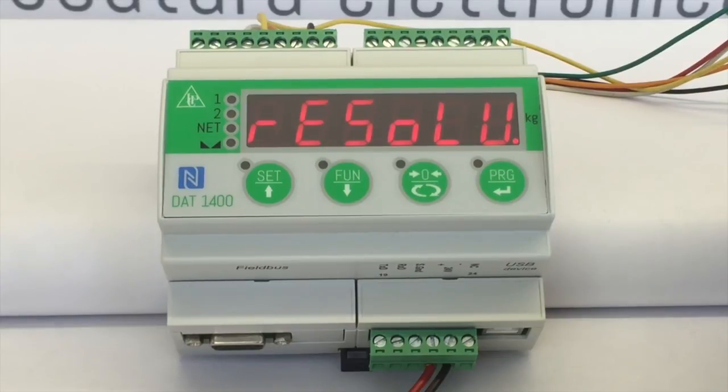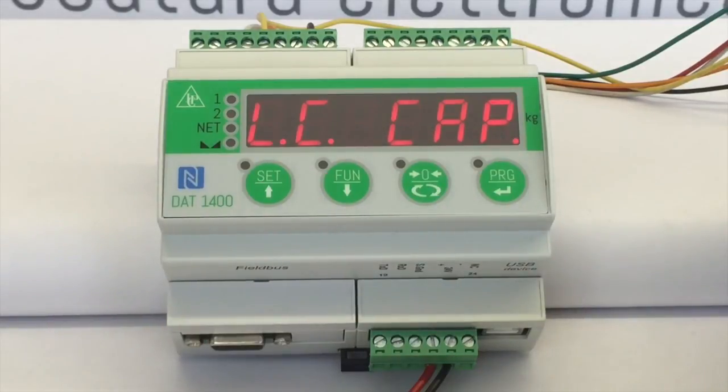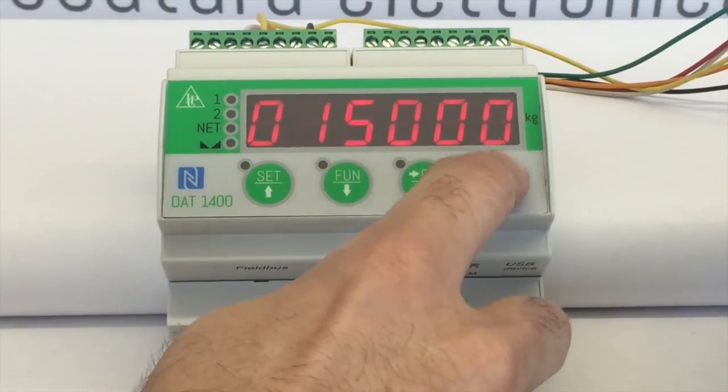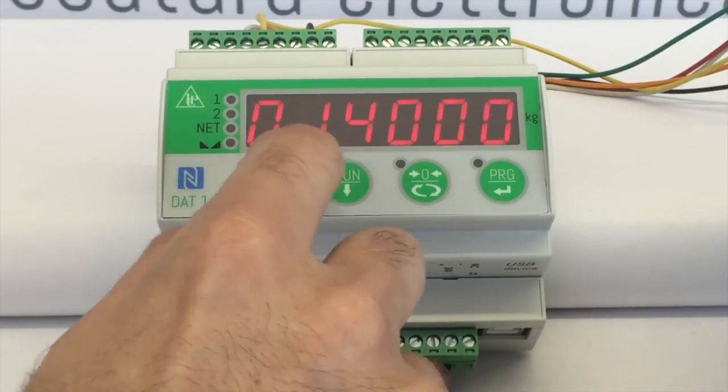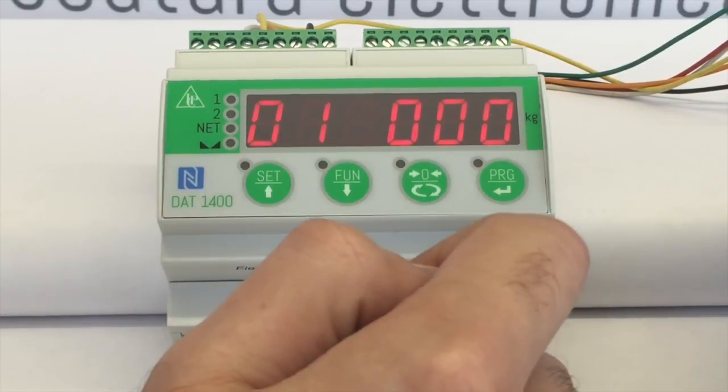By scrolling with SET and FAN, let's set the TOTAL SYSTEM CAPACITY, LC CAP, which is the sum of the capacities of each individual load cell in the system. For example, 10,000 kg. Press PRG again to select units, tens or hundreds and set the desired value with SET and FAN. To confirm, hold down PRG for 2 seconds.